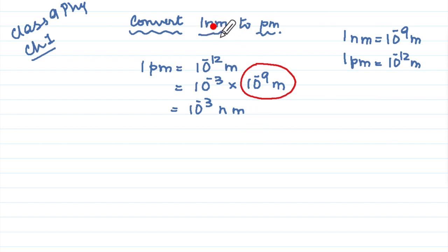Now we are asked 1 nanometer. So you will say therefore 1 nanometer is going to be equal to dash picometer. Your thinking step will be 1 picometer is 10 to the power minus 3 nanometer. So 1 nanometer is going to be how much?